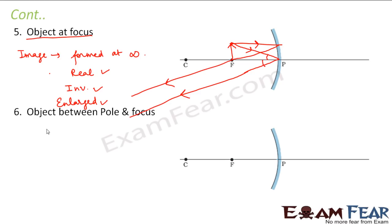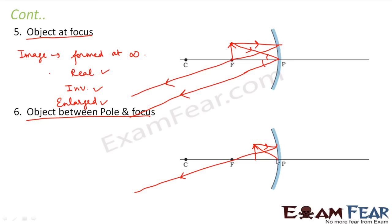Now let us look at the last scenario where the object is placed between the pole and the principal focus — we have brought the object even closer. A ray of light parallel to the principal axis after reflection passes through the principal focus, and another ray approaching the pole obliquely goes obliquely after reflection. In this case the two rays are not going parallel but are actually diverging away from each other.